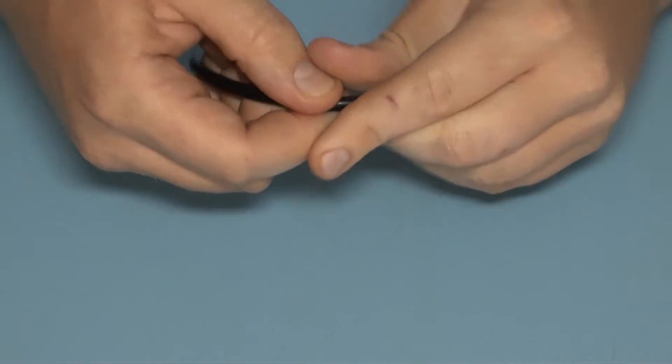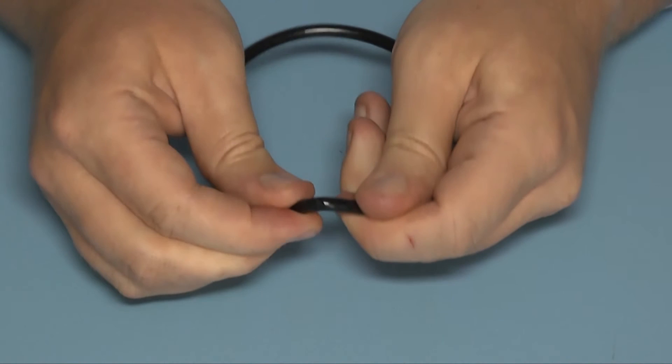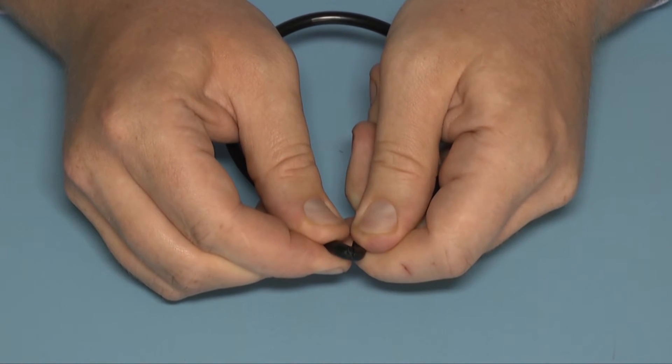Now check your second o-ring. This one has a small cut in it, so it should be replaced with a new o-ring.